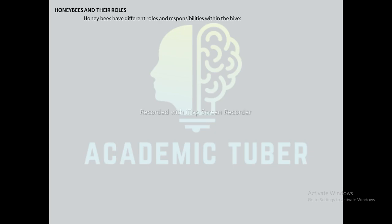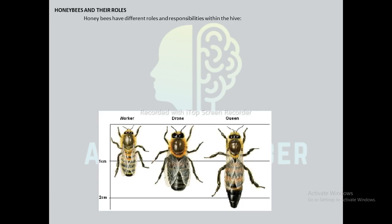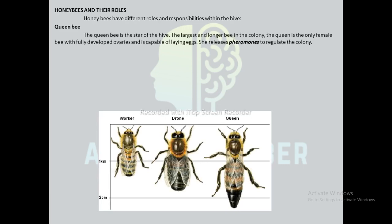Bees have different roles and responsibilities within the hive. First is the queen bee. The queen bee is the star of the hive — the largest and longest bee in the colony. The queen is the only female bee with fully developed ovaries and is capable of laying eggs. She releases pheromones to regulate the colony.